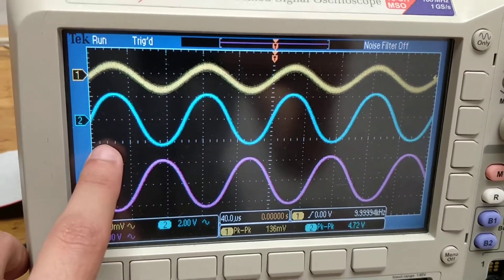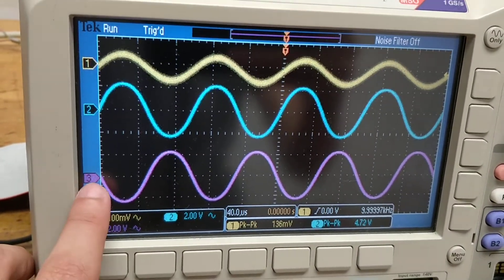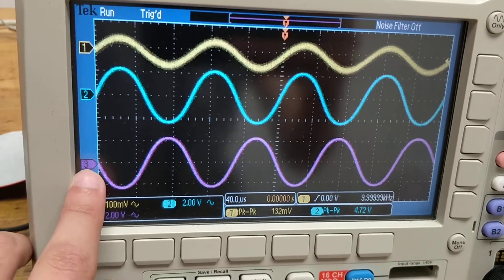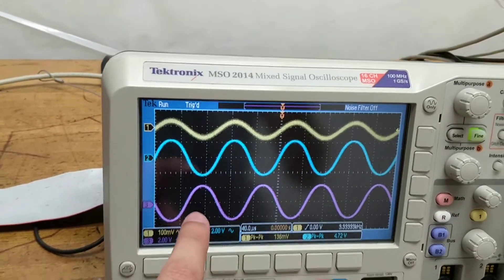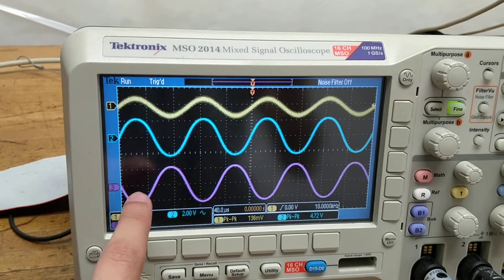So that's a nice amount of gain and then channel 3 is basically the other collector located here and as we can see there's a 180 degree phase shift.